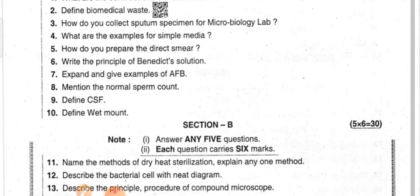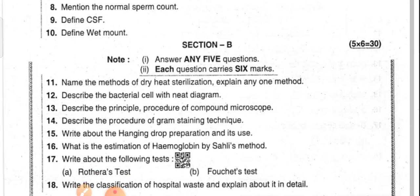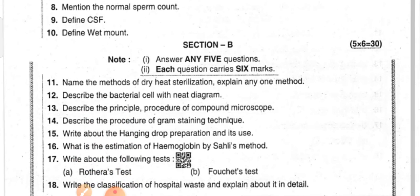How do you prepare the direct smear? Write the principle of Benedict's solution. Expand and give examples of AFB — acid-fast bacillus. Mention the normal sperm count. Define CSF. Define wet mount.